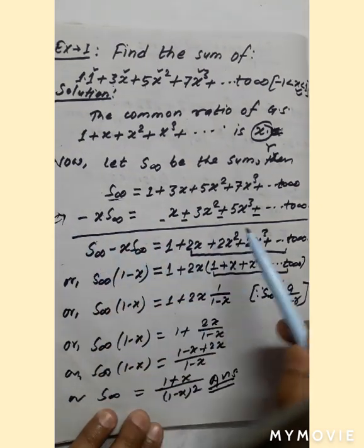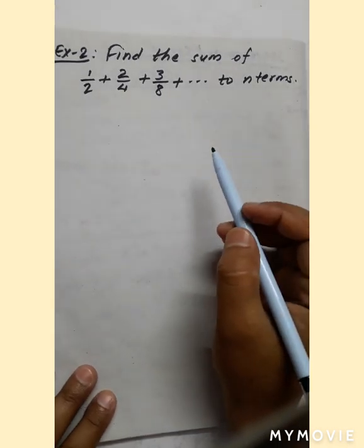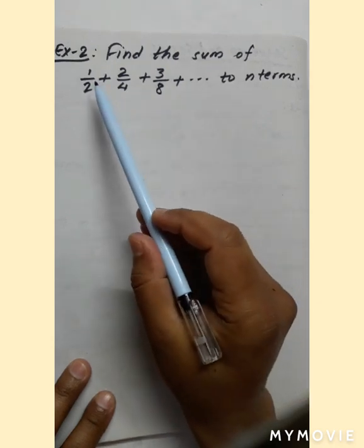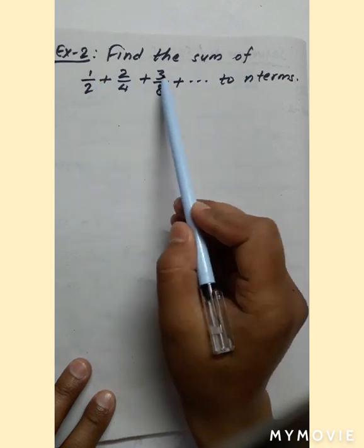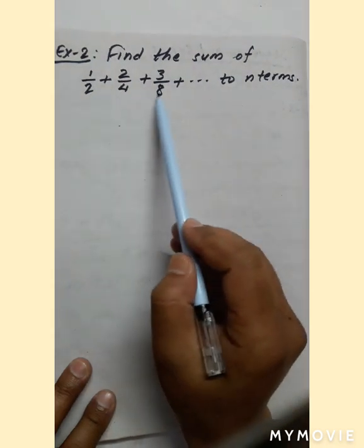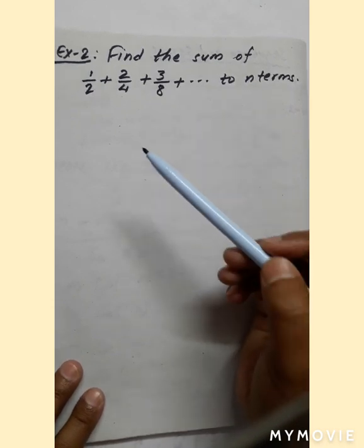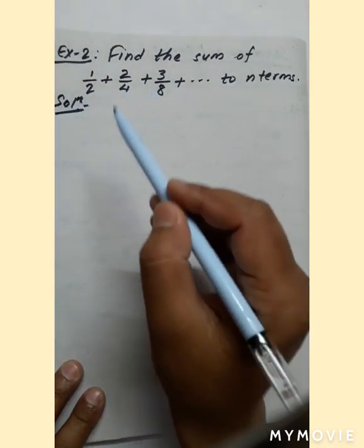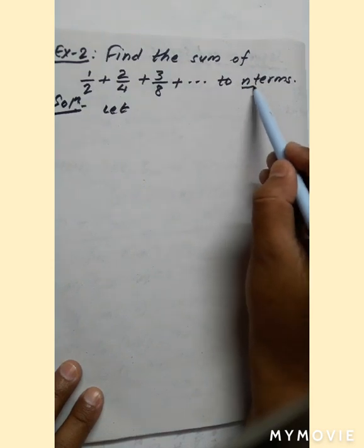Let us take one more example. Find the sum of 1/2 + 2/4 + 3/8 + ... The numerators 1, 2, 3 form an arithmetic series and the denominators 2, 4, 8 form a geometric series. So this is also an arithmetico-geometric series. Here we have to find the sum to n terms.